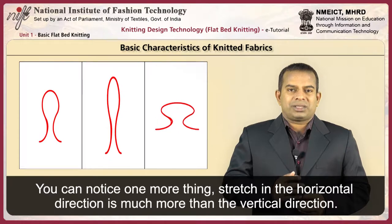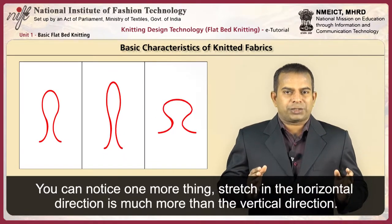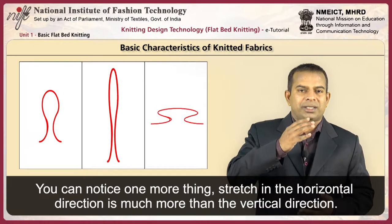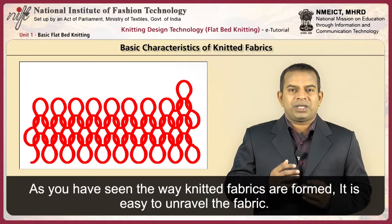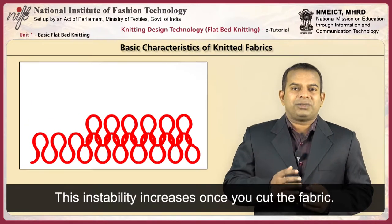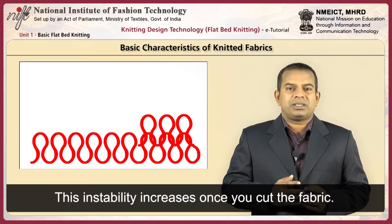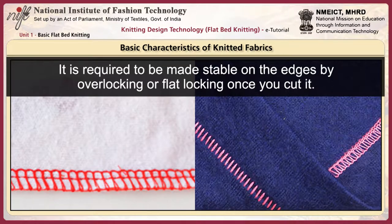You can notice one more thing: the stretch in the horizontal direction is much more than in the vertical direction. As you have seen, the way knitted fabrics are formed makes it easy to unravel the fabric. This instability increases once you cut the fabric, so it is required to be made stable on the edges by overlocking or flatlocking once you cut it.